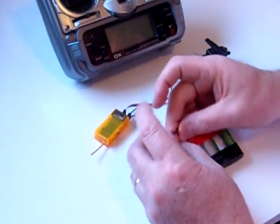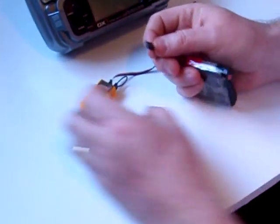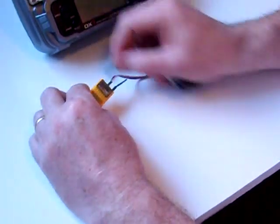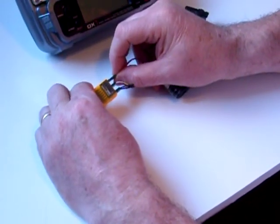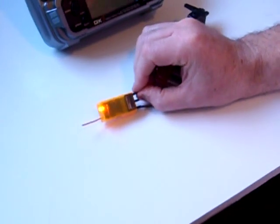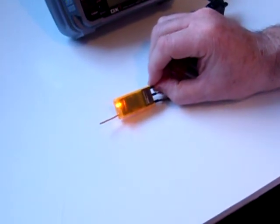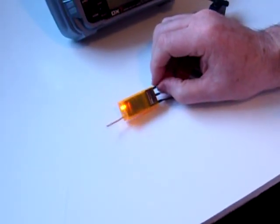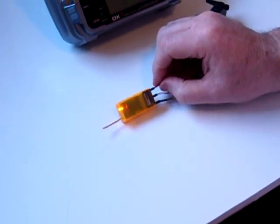With the transmitter still off, we then plug in our power supply, our battery. This can now go into any free socket. I'll put it in the top one here. And you'll notice that we have a rapid flashing orange light. This shows you that the receiver is in bind mode.